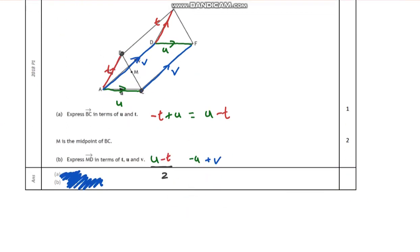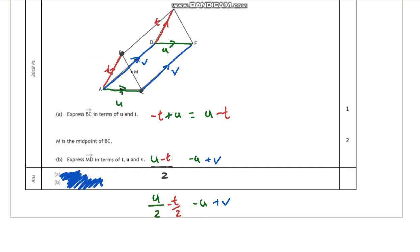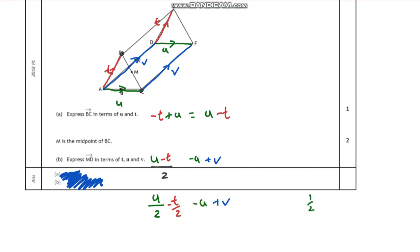Let me simplify that. It's going to be a half u, and then negative u stays the same, plus v stays the same, and take away t over two. So I've got a half u take away u: half take away one gives me negative a half. I'm going to end up with negative a half u, take away t over two, and I still have my plus v.